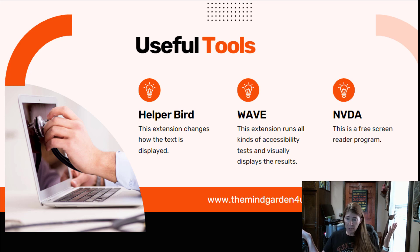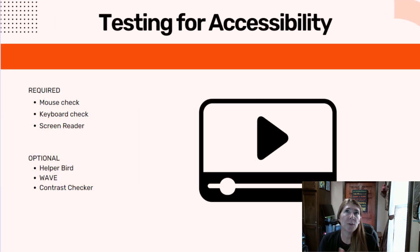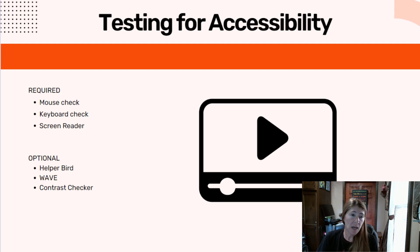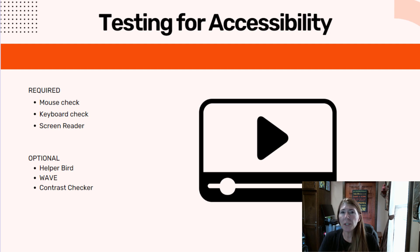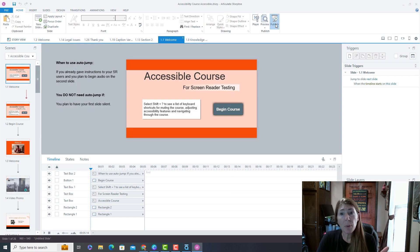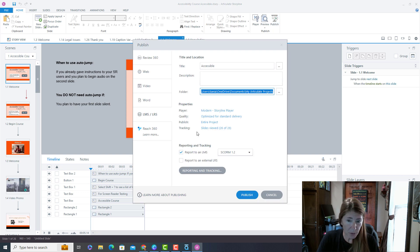The first step to doing accessibility testing is to get your course published as a SCORM file or in whatever format you're actually going to use on the web, so it opens up in a browser window and functions just as if it's online. I actually take it one step further and put my course online — I really want to test in the real environment it will be used. Let me show you how I do that, starting with publishing to the LMS.